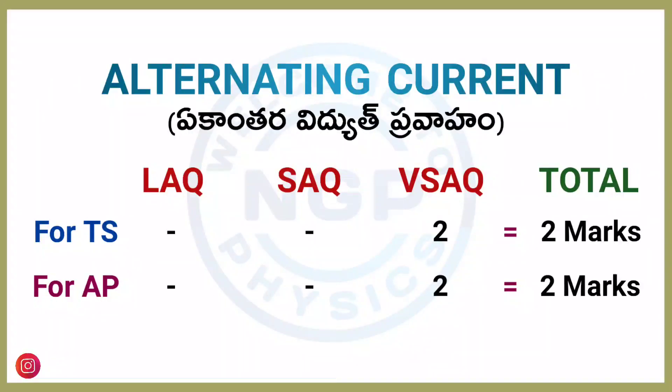Next chapter: Alternating Current. For both AP and TS students, one 2-marks question. Chapter weightage is 2 marks.